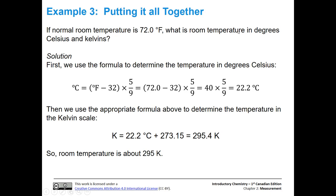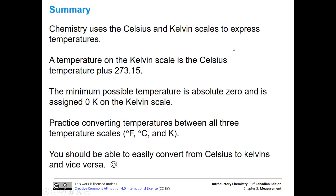In summary, chemistry uses Celsius and Kelvin scales to express temperatures. The Kelvin temperature equals the Celsius temperature plus 273.15, and the minimum possible temperature is absolute zero, which is 0 K. Make sure you can practice converting temperatures between all three scales, but especially focus on converting between Celsius and Kelvin quickly and consistently.